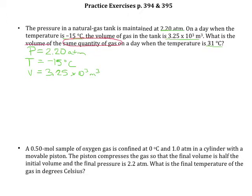What is the volume of the same quantity when the temperature is 31 degrees C? This tells us we're looking at a problem with a before and after set of conditions. The initial temperature was negative 15 — that's T1. The initial volume is V1. The next temperature, T2, is 31 degrees C, and we want to find V2. Since they haven't given us any other information about pressure, we assume pressure is constant.